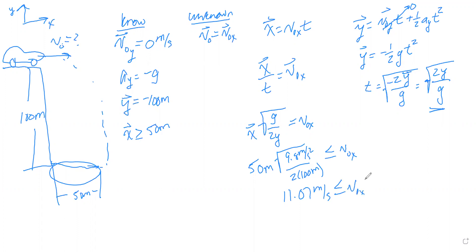Our initial x velocity needs to be greater than or equal to 11.07 meters per second. So this car has to be driven off this cliff with a velocity of 11.07 meters per second or greater in order for it to clear this pond and crash on the other side of the pond for the scene.